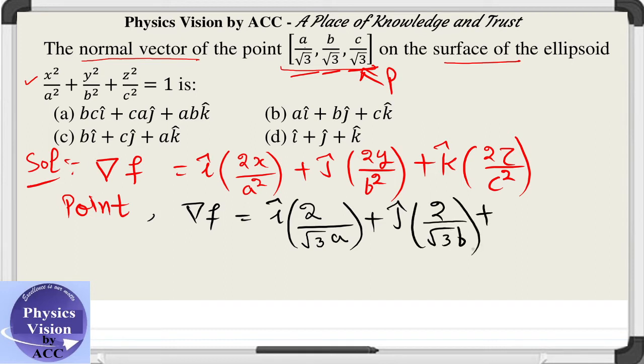And then we have k cap and 2 by under root 3 c. This is our answer. What has been asked in the question is delta f. This is our answer because they have asked for the normal vector.